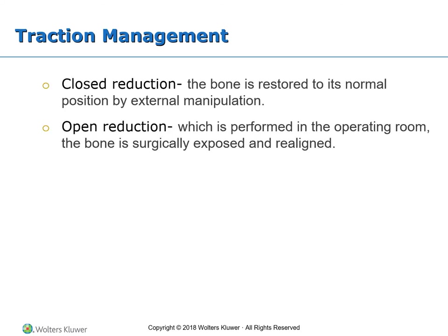In closed reduction, the bone is restored to its normal position by external manipulation. A bandage, cast, or traction then immobilizes the area. X-rays are taken to ensure correct alignment of the bone. Depending on the site and type of fracture, the client receives a local or general anesthetic. Open reduction is performed in the operating room, where the bone is surgically exposed and realigned. The client usually receives general or spinal anesthetic. Radiographic studies taken while the client is still under anesthesia show whether realignment is adequate.